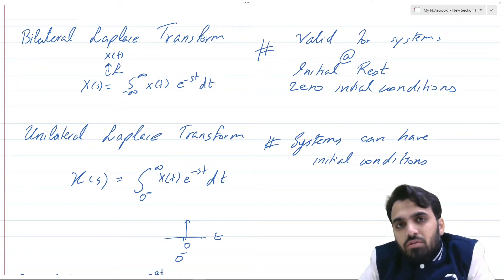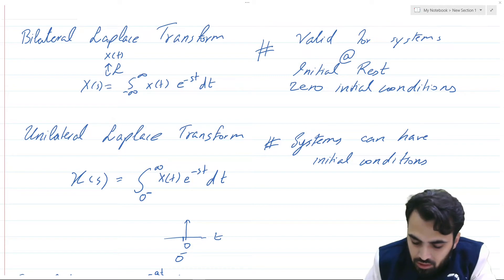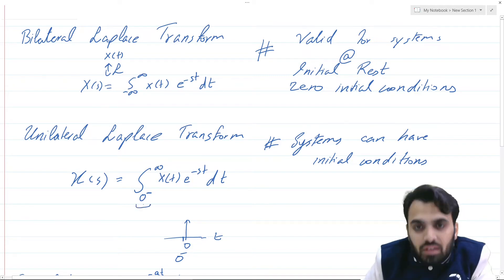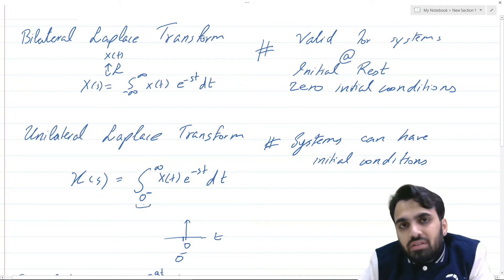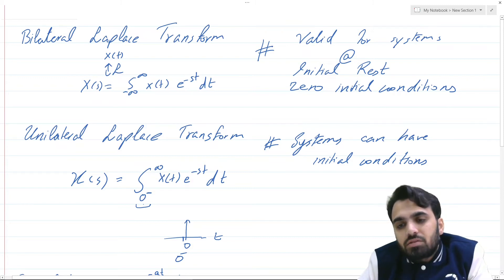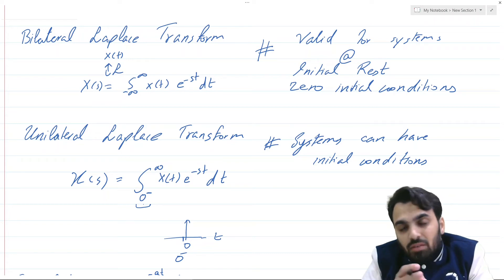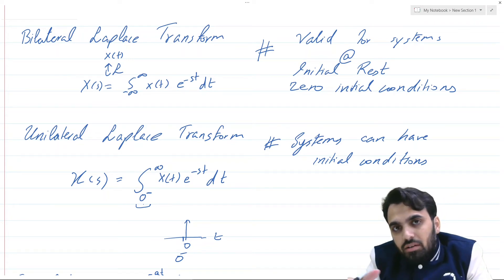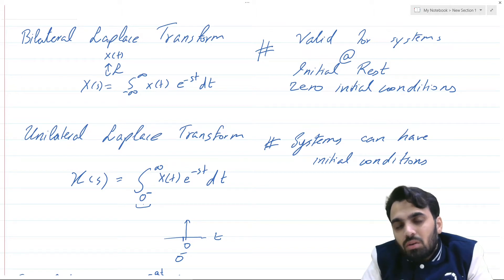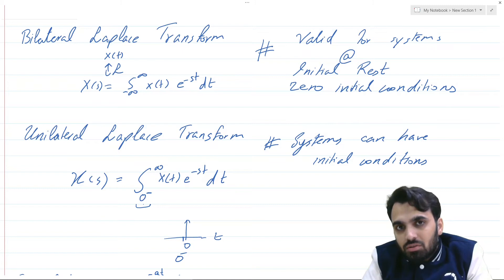An important consideration is that the lower limit of integration is 0 minus, which means the unilateral Laplace transform exists for right-sided signals. Since integration starts from 0 minus and goes toward the right side, the region of convergence is always right-sided for the unilateral Laplace transform.